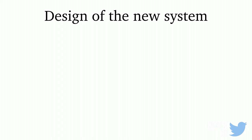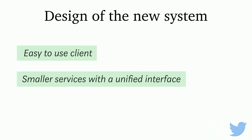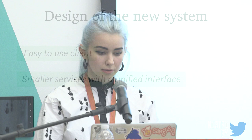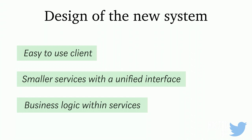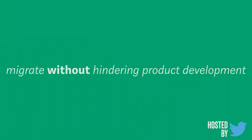So let's get into what our new system would look like. These are some of the things we'd want in a brand new system. First, we want an easy-to-use client so our front end developers can develop much more easily. We also want smaller services — right now we have a monolith, so we want to break things up, make more performant services, and have a unified interface for those services. And we want to make sure that our business logic stays within those services, not floating around into different areas. And of course, we need to do all of this without hindering product development — we can't migrate everything all at once.